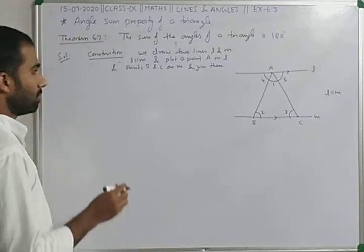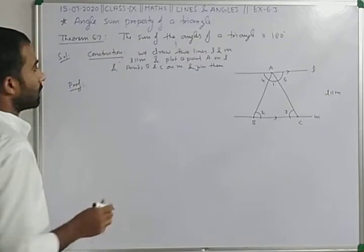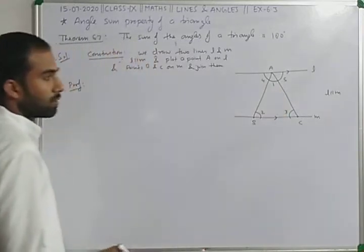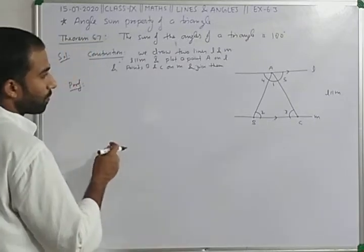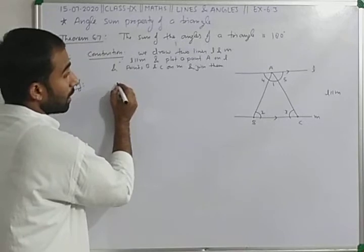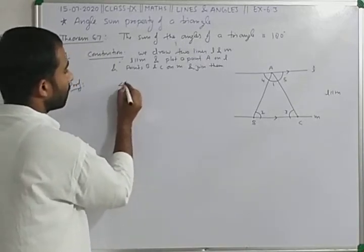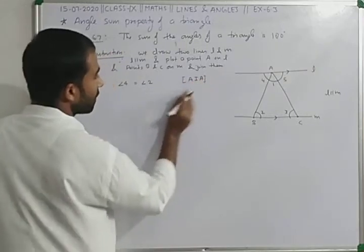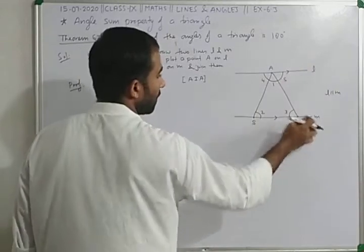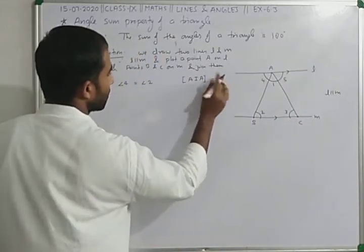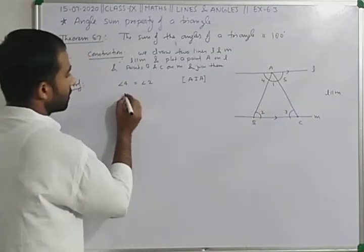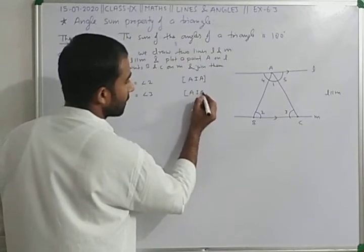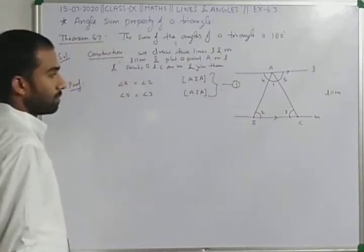Now we can write the proof. We can write angle 4 is equal to angle 2 — by alternate interior angles, because L is parallel to M. Similarly, angle 5 is equal to angle 3, by the same reason — alternate interior angles. This is equation 1.